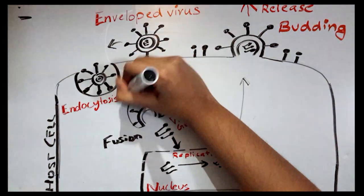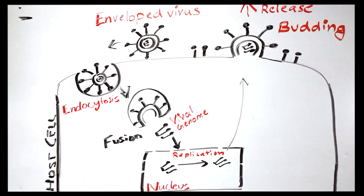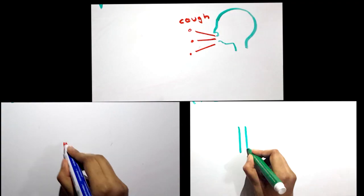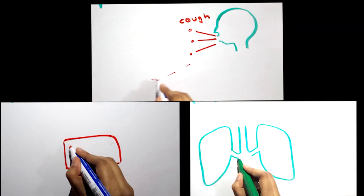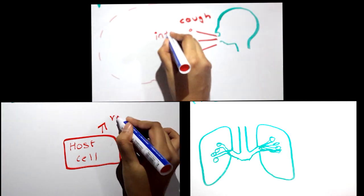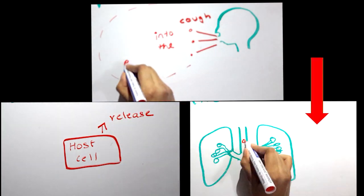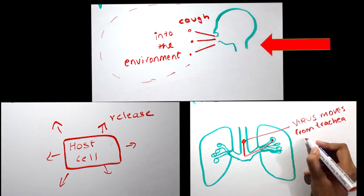Budding does not immediately destroy the host cell, but will slowly use up the cell membrane. Once replication has been completed and the host cell is exhausted of all its resources, the virus begins to leave the cell by several methods — this is called viral shedding. Viral shedding may take place from a single cell, from one part of the body into another, or from bodies into the environment.